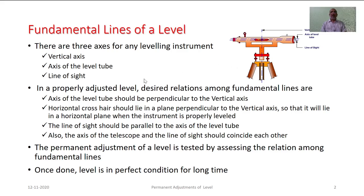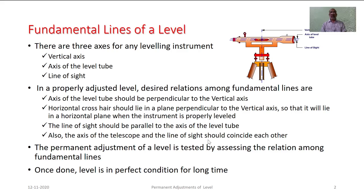In a properly adjusted equipment, the desired relationships are: the axis of the level tube should be perpendicular to the vertical axis; the horizontal hair should lie in a plane perpendicular to the vertical axis; and the line of sight should be parallel to the axis of the level tube. In addition, regarding constructional aspects, the axis of the telescope and the line of sight should coincide with each other.